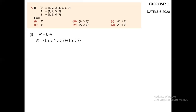First of all, we write the elements of U: {1, 2, 3, 4, 5, 6, 7}, then the difference symbol, and then the elements of A: {1, 2, 5, 7}. When we find the difference, we take all the elements of U that are not in A. So A complement equals {3, 4, 6}.